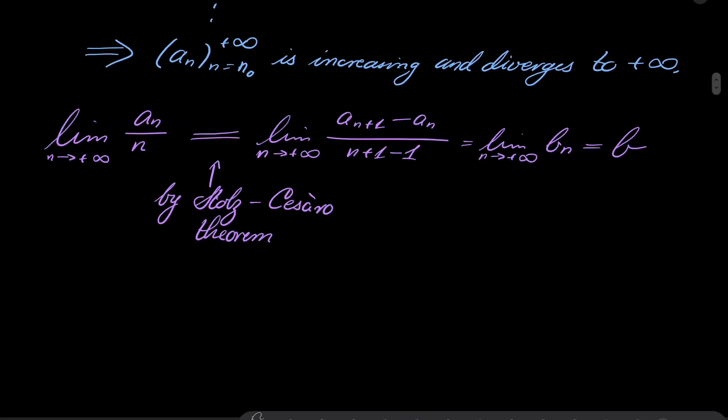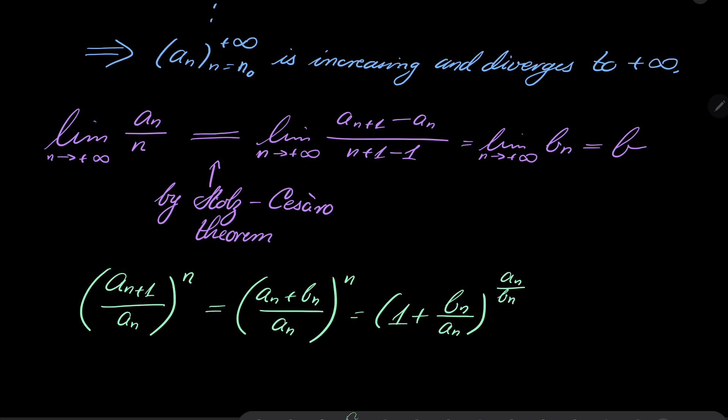It's the discrete analog of L'Hospital's rule. And now, finally, we are able to tackle our limit, because I remember that we wish to evaluate this limit as n goes to infinity. And I will do the following trick: a_{n+1} can be replaced by (a_n + b_n) / a_n to the power of n. And now we have (1 + b_n / a_n). All right. And now I will do the following. I will write a_n over b_n in the exponent. But of course, now I have to raise everything to the power, what power? b_n times n over a_n. Now everything works well.